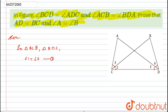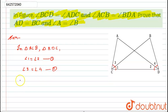Let this be equation number 1. Similarly, angle ACB is equal to angle BDA means angle 3 is equal to angle 4. It is given to us, so let this be equation number 2. Now I will add equation 1 and equation 2.